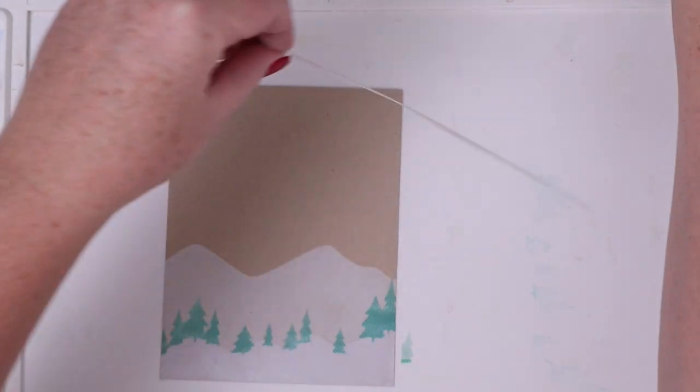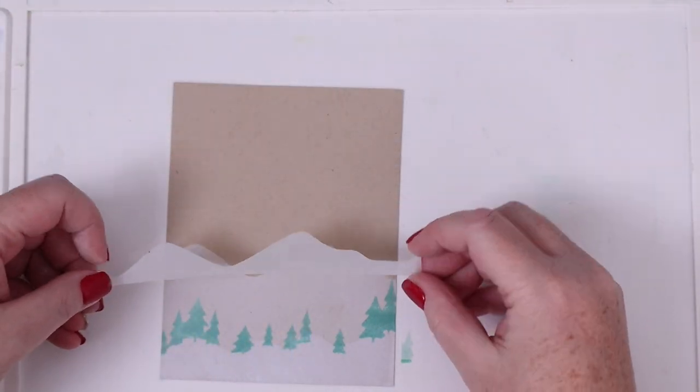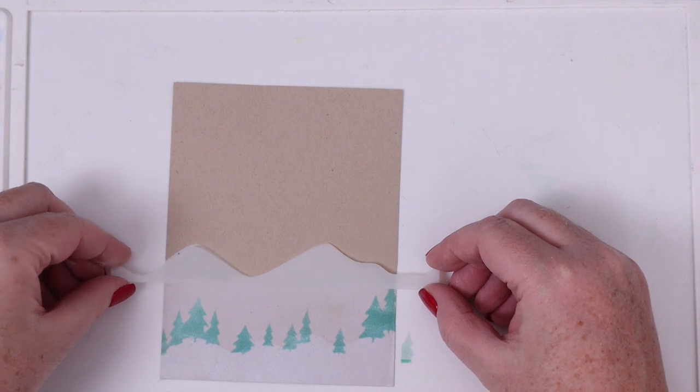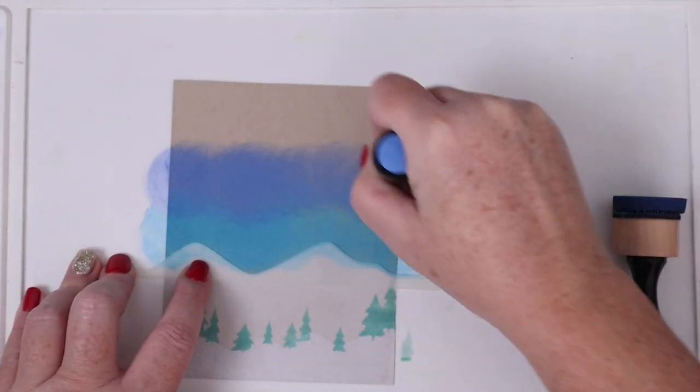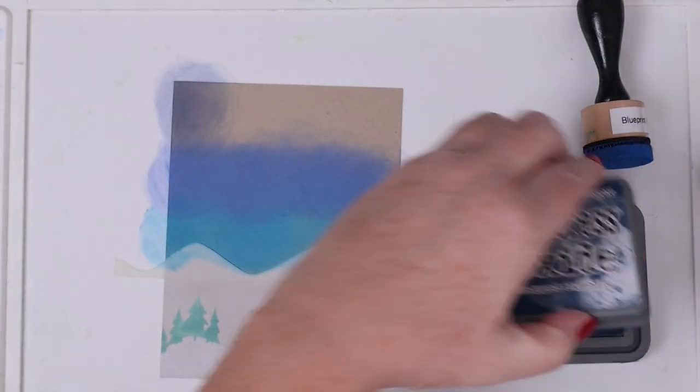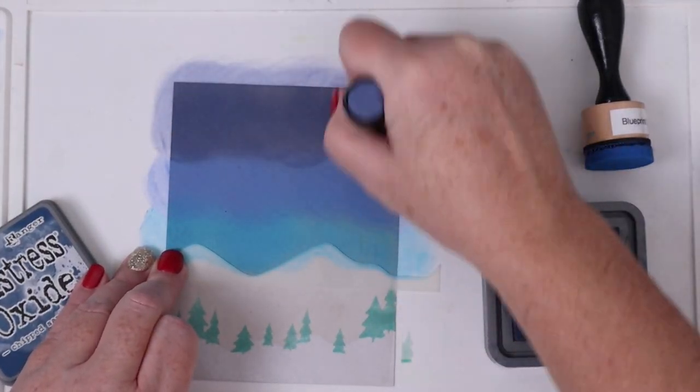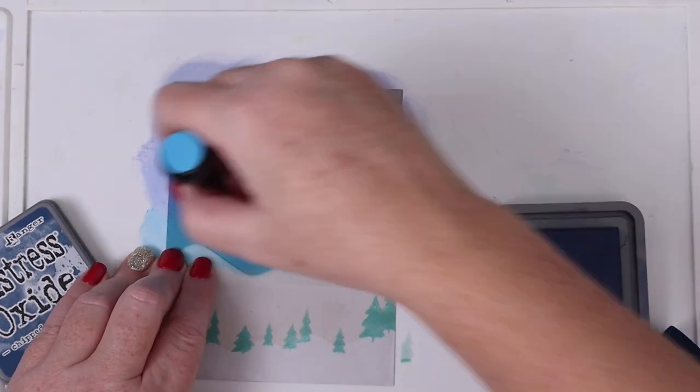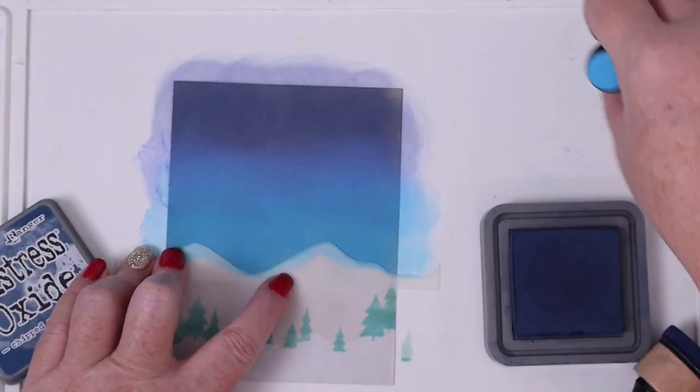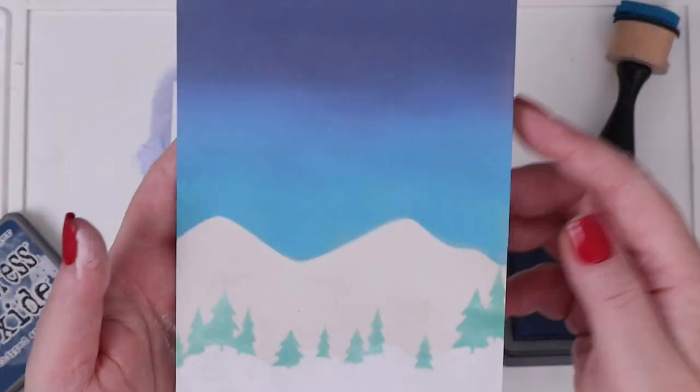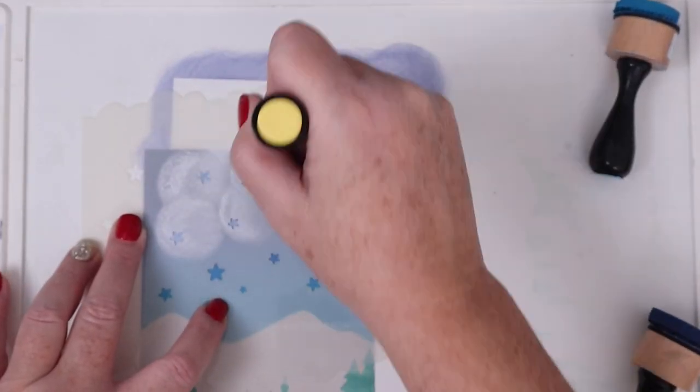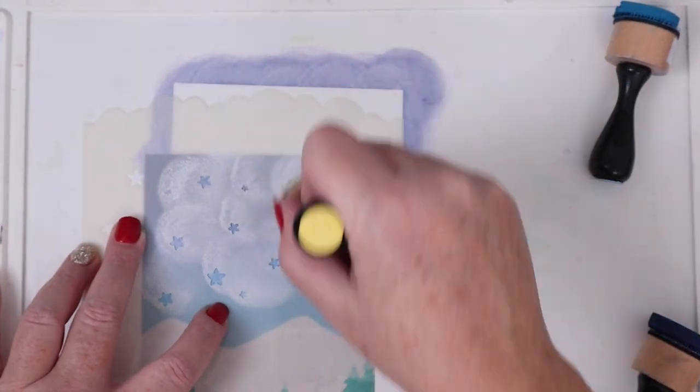This time I'm using the mask cut off edge with the Pixie Spray to cover up the top mountains so I can ink blend the sky. I'm using Mermaid Lagoon, Blueprint Sketch, and Chipped Sapphire for a layered looking night sky. To complete the sky I'm going to use the Sky Scene Builder stencil and pounce white ink over those stars.